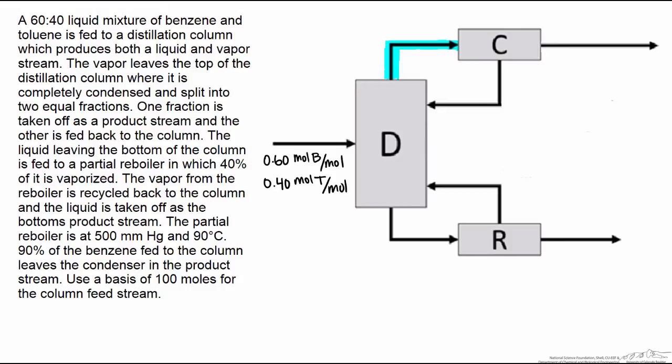First of all, the fact that it is completely condensed means that you have two liquid streams coming out of the condenser. But it also means that the compositions of all three of the streams are the same. The second thing to take a look at is the fact that it states two equal fractions. You cannot assume that the two streams coming out of a condenser are equal unless you're told so.